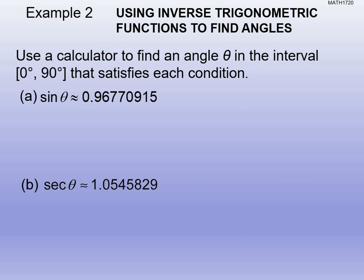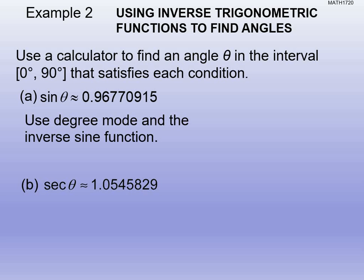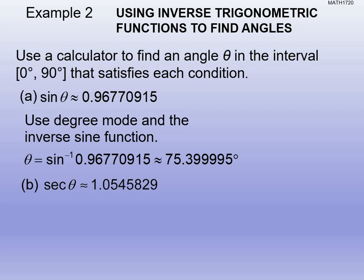Now we go the opposite way: we have the ratio and need to find the angle. For sine of 0.9677, that's the ratio of the opposite leg over the hypotenuse. Use the inverse sine function — hit second sine, type in 0.96770915, and hit enter. Still in degree mode, you should approximately get 75 degrees.